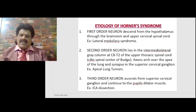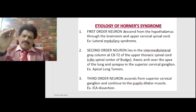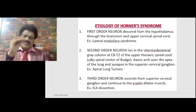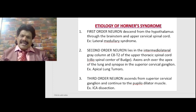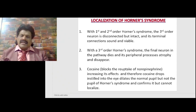The third order neuron ascends from the superior cervical ganglion along the internal carotid artery to the pupillodilator muscle. A classic example of a third order neuron lesion is internal carotid artery dissection. So the first order neuron runs from the hypothalamus to C8-T2, the second order from C8-T2 to the superior cervical ganglion, and the third order from the superior cervical ganglion to the pupillodilator muscle. Classic lesions: lateral medullary syndrome (first order), apical lung tumor (second order), internal carotid artery dissection (third order).